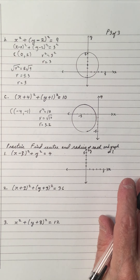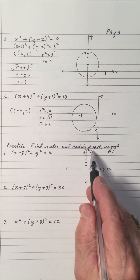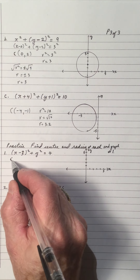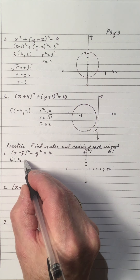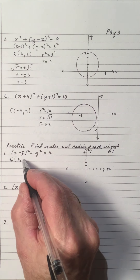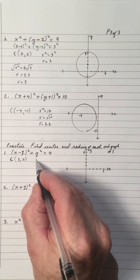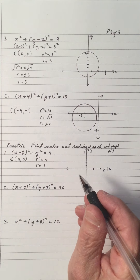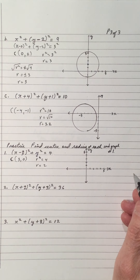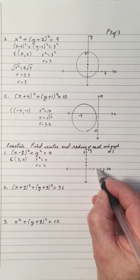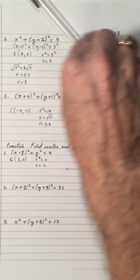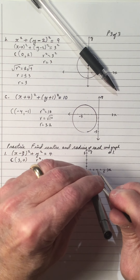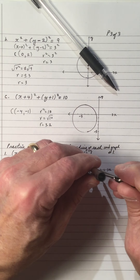Practice — pause the video and see if you can do these yourself. Find the center of the circle in each and graph, but I only want the graph for number 1. The center: that's negative 3, so opposite is positive 3. There's no bracket on y, so it's zero — understood as y minus 0 squared. The radius: r squared equals 4, so r equals 2. The center is (3, 0) and the radius is 2.